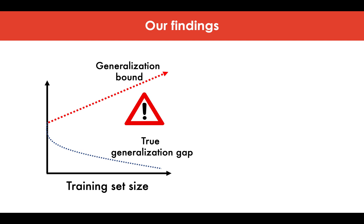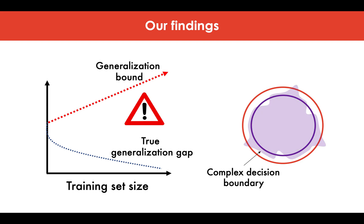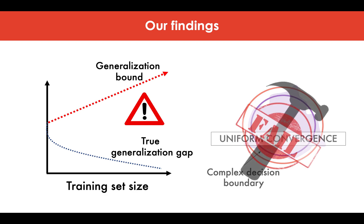Next, and more importantly, we present some example binary classification tasks in deep learning, where we show that even though SGD generalizes well, it learns a decision boundary that is complex in a certain way that all uniform convergence bounds are vacuous in these settings. That is, uniform convergence provably fails to explain generalization in these cases.